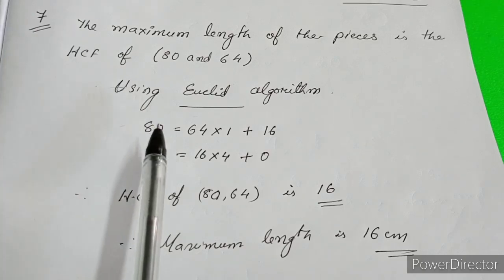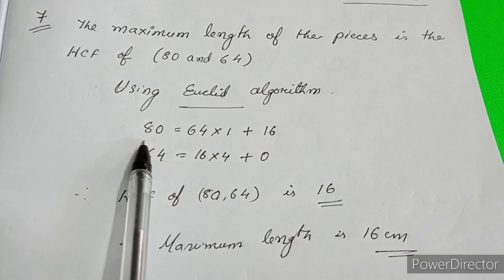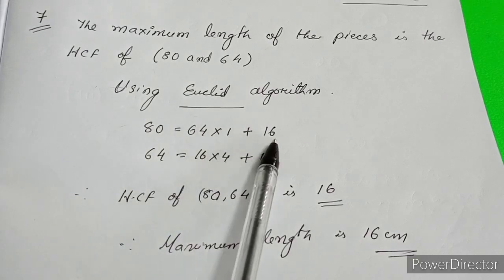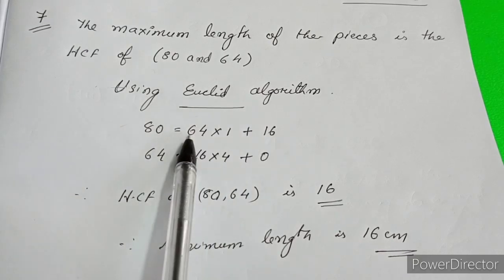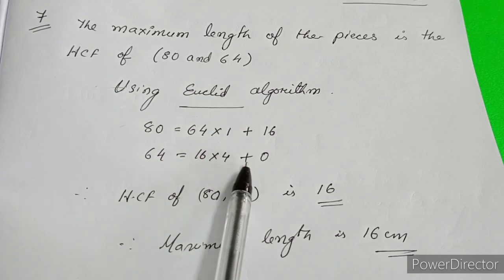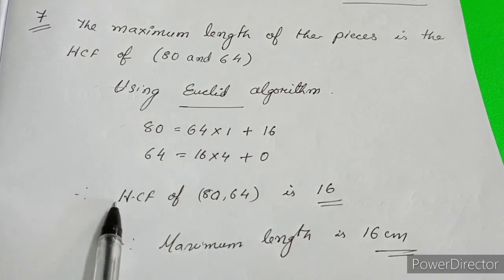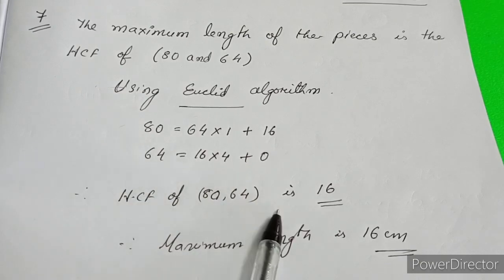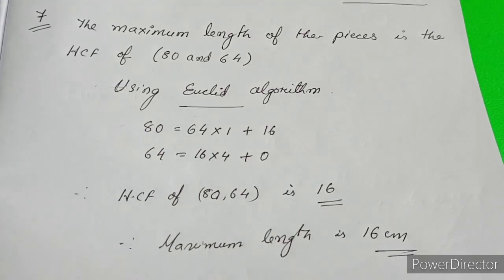To find the HCF of 80 and 64: 80 equals 64 into 1 plus 16 is the remainder. Then 64 will become dividend. 64 equals 16 into 4 plus 0. Since remainder is 0, we'll stop here. HCF of 80 and 64 is 16. Therefore, the maximum length is 16 centimeters. Very easy concept.